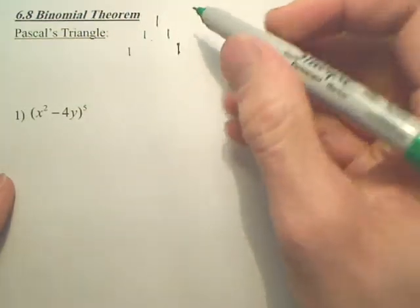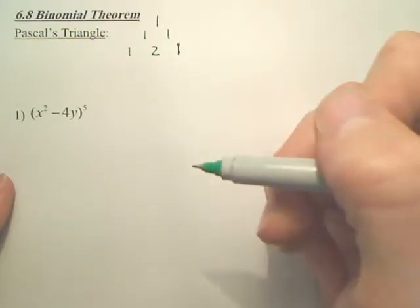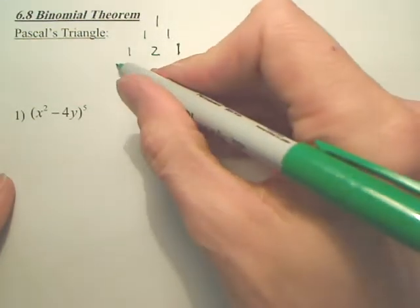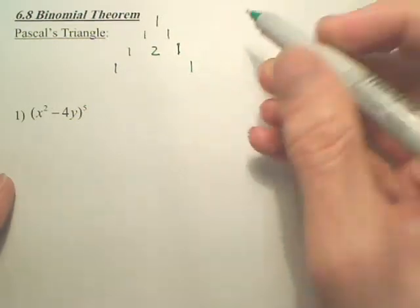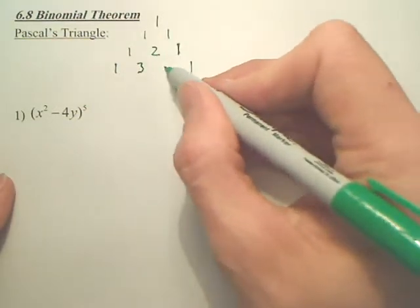But over here, once you put a 1 on each side, 1 plus 1 is 2. You add them. You still put 1's on the side. 1 plus 2 is 3. 2 plus 1 is 3.